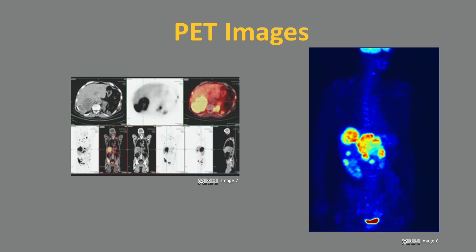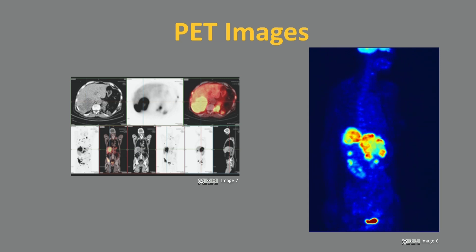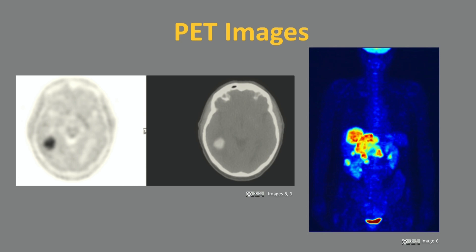But more importantly, the images show some tumours in the abdomen, which will help the clinician to decide on treatment for this patient. To the left, image 7, is an example of another PET scan of the body depicting neuroendocrine tumours and metastases. PET is particularly useful in imaging the brain, for instance, glioma.